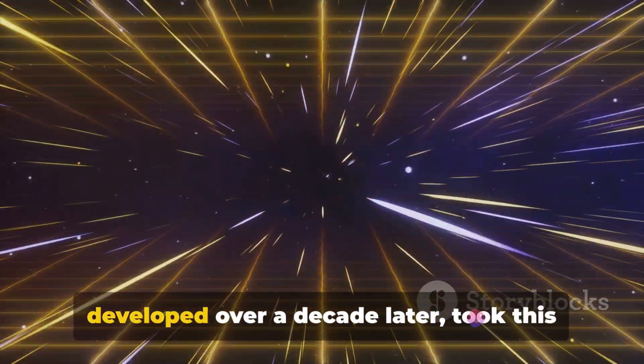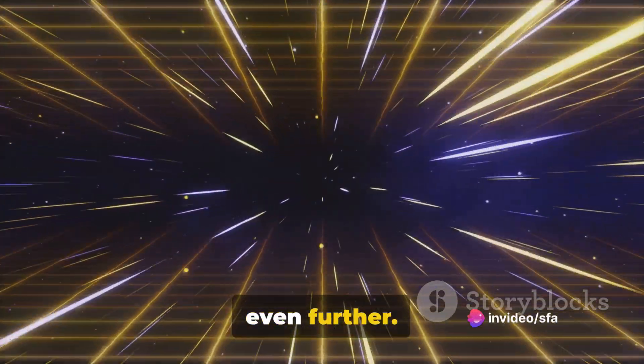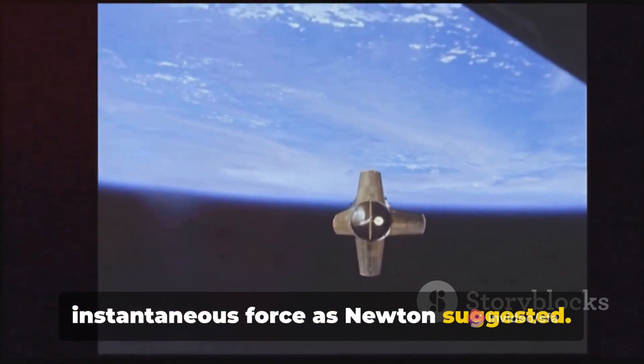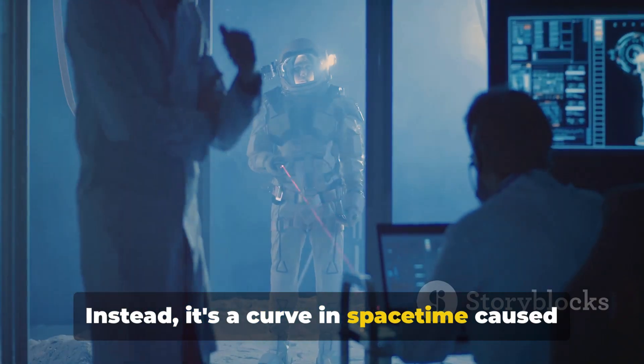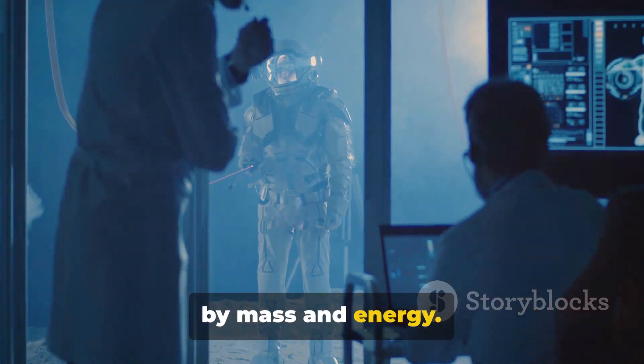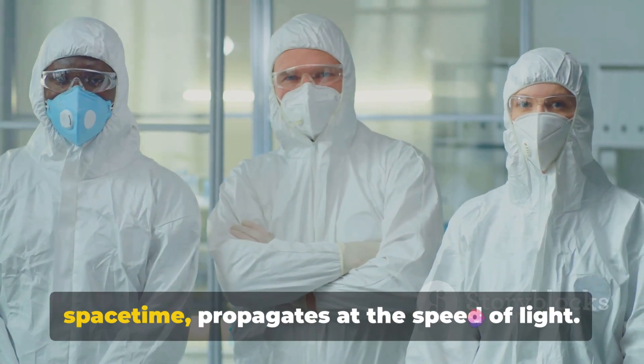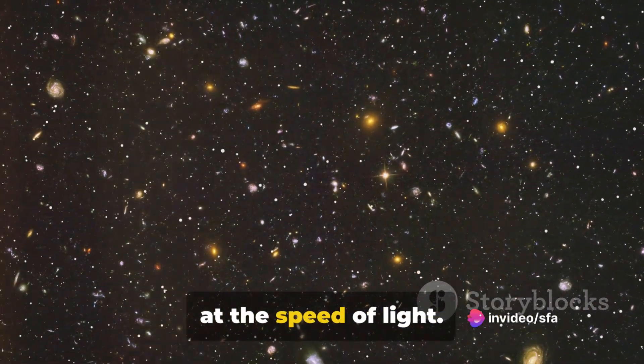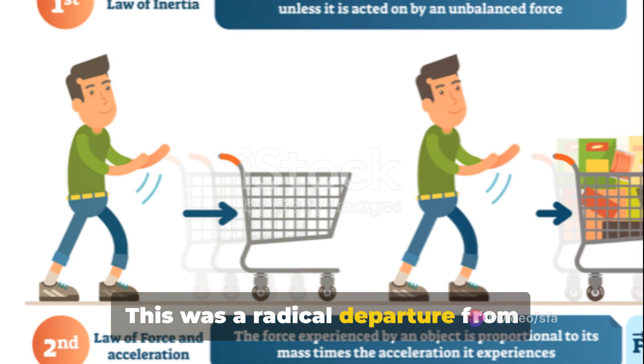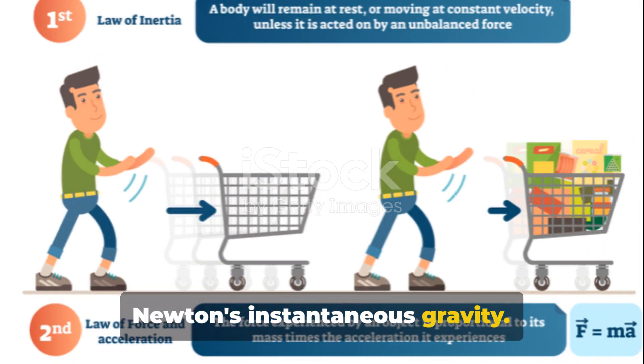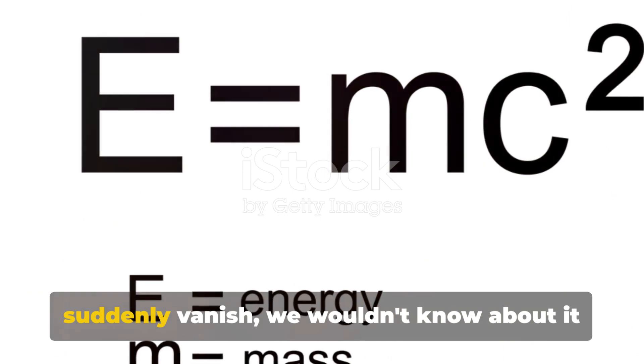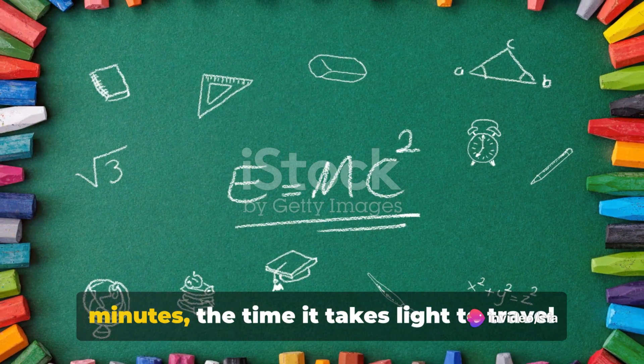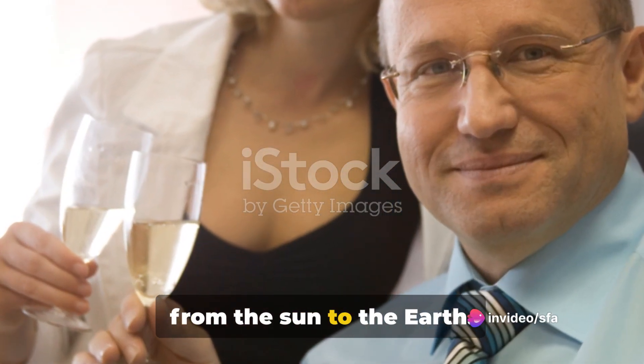Einstein's general theory of relativity developed over a decade later took this even further. It contended that gravity is not an instantaneous force, as Newton suggested. Instead, it's a curve in space-time caused by mass and energy. And this curve, this bending of space-time, propagates at the speed of light. Yes, you heard it right. Gravity travels at the speed of light. This was a radical departure from Newton's instantaneous gravity. It suggested that if the sun were to suddenly vanish, we wouldn't know about it or feel its effects for about eight minutes, the time it takes light to travel from the sun to the earth.